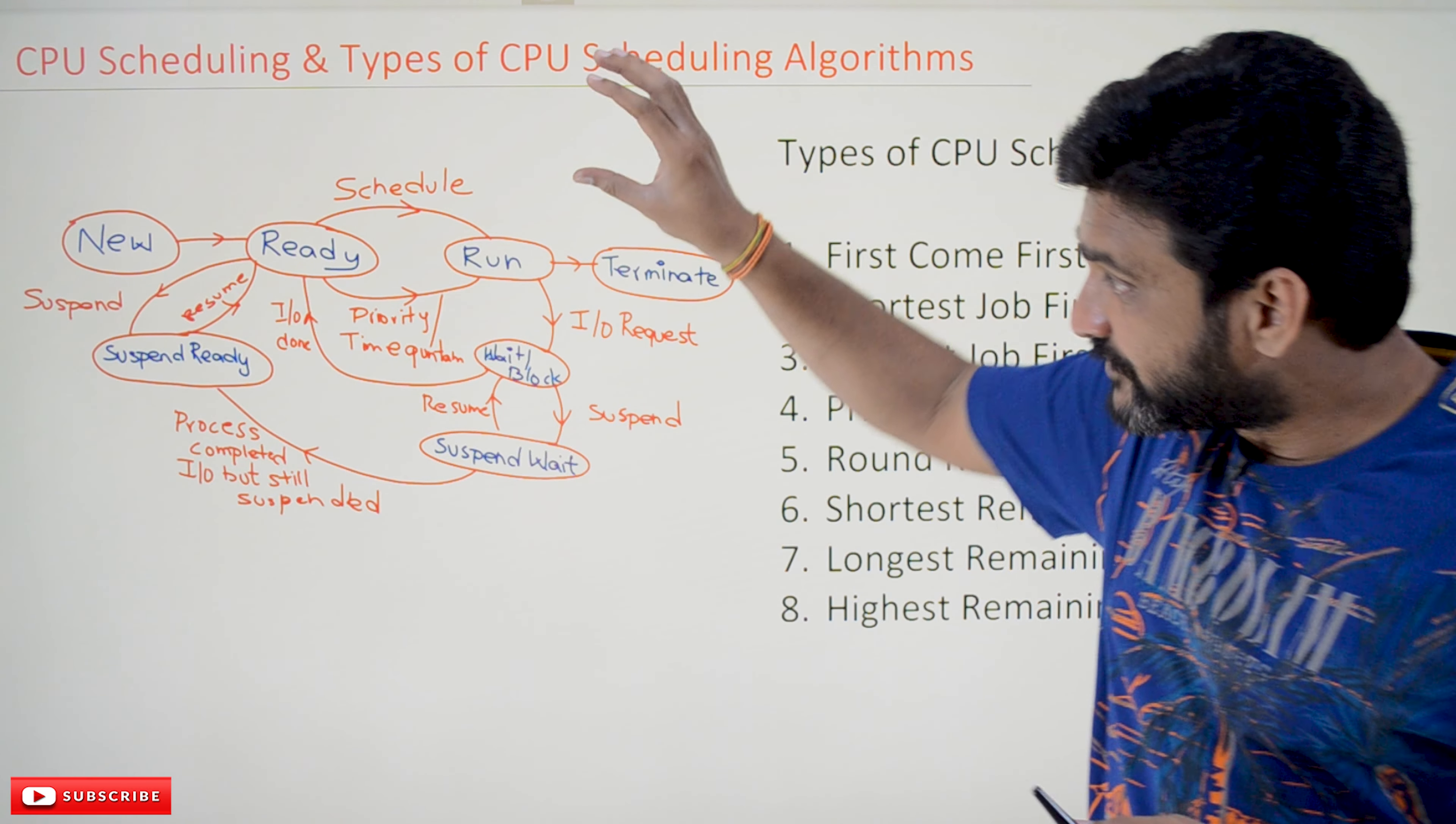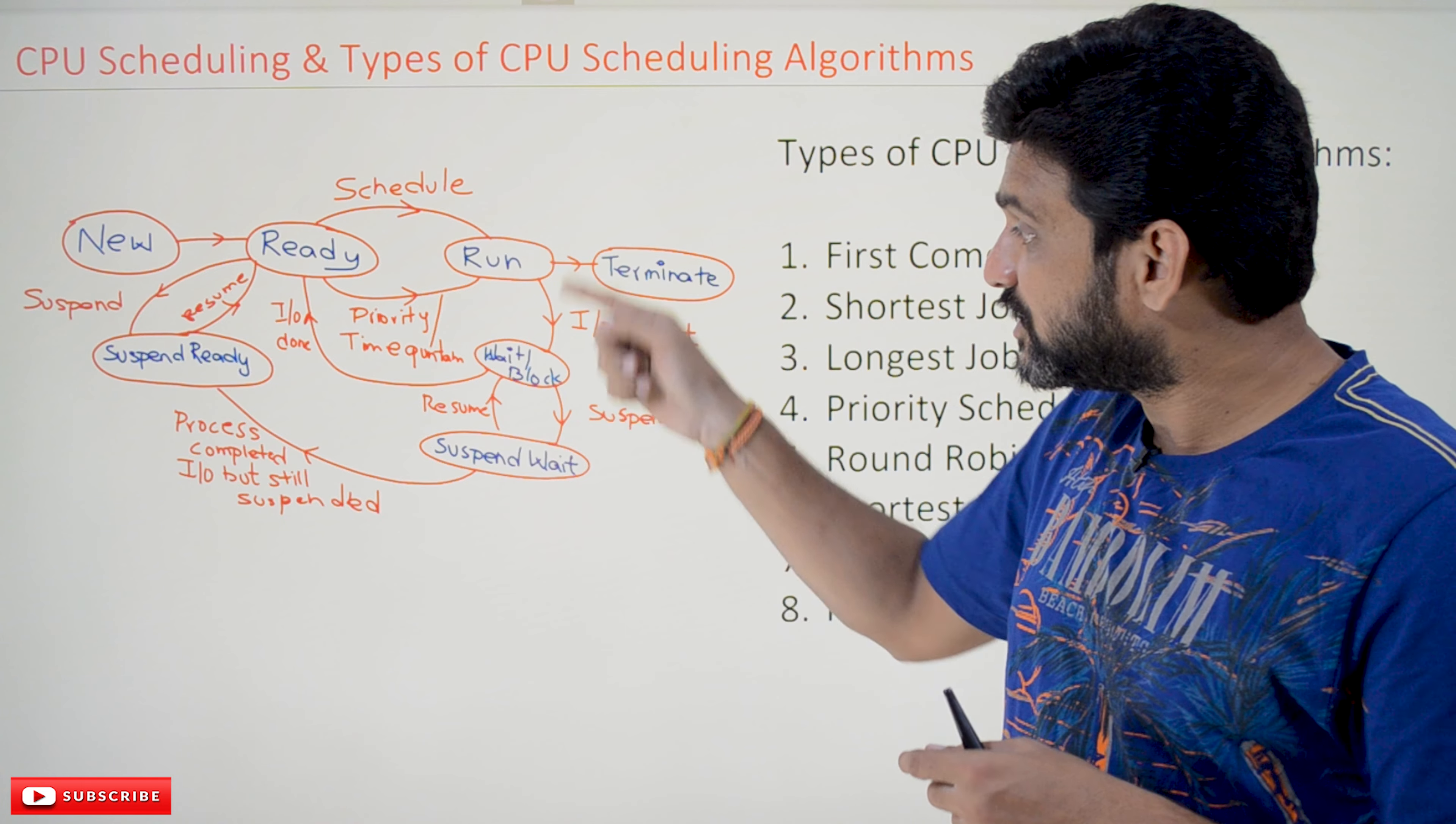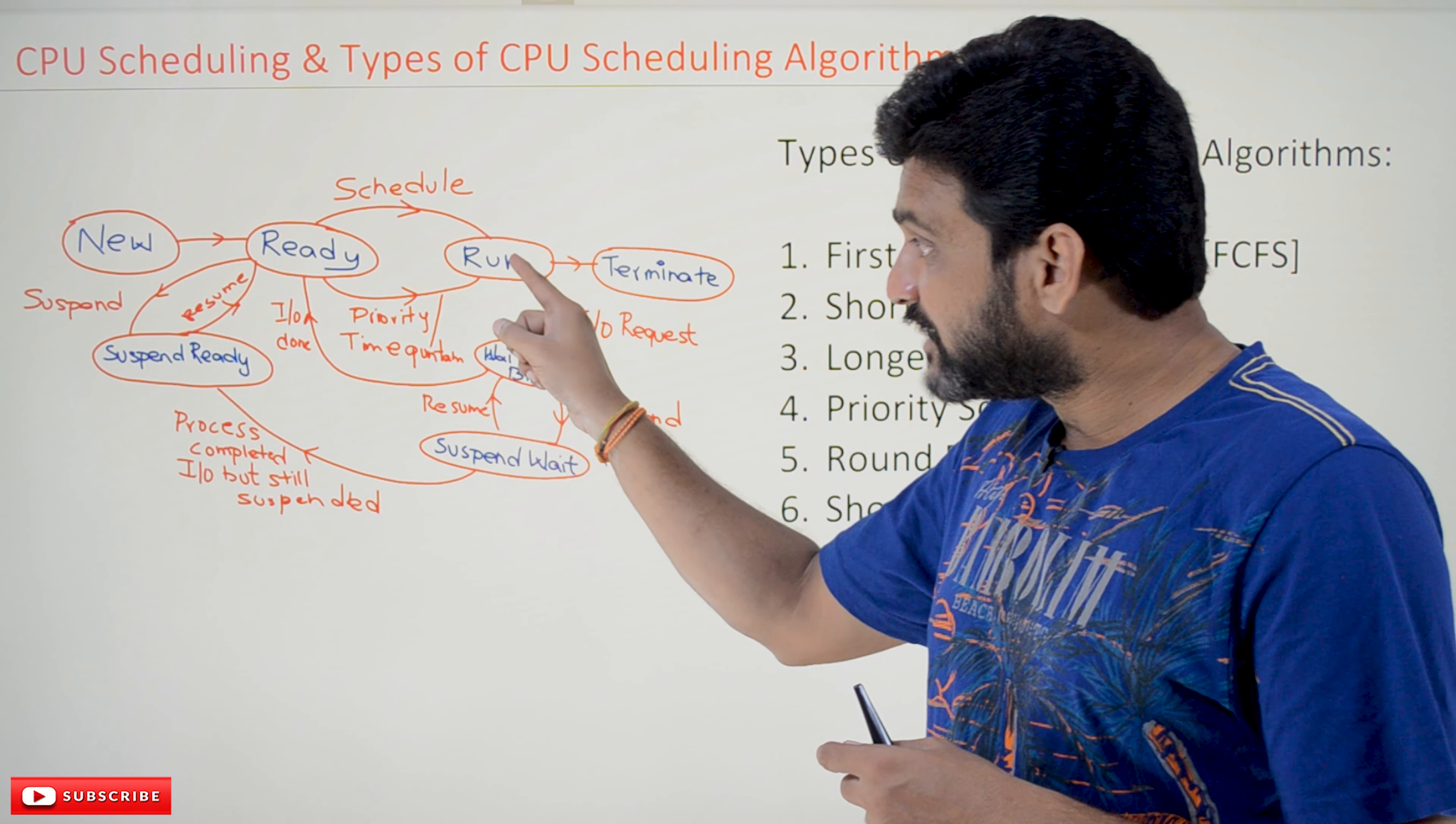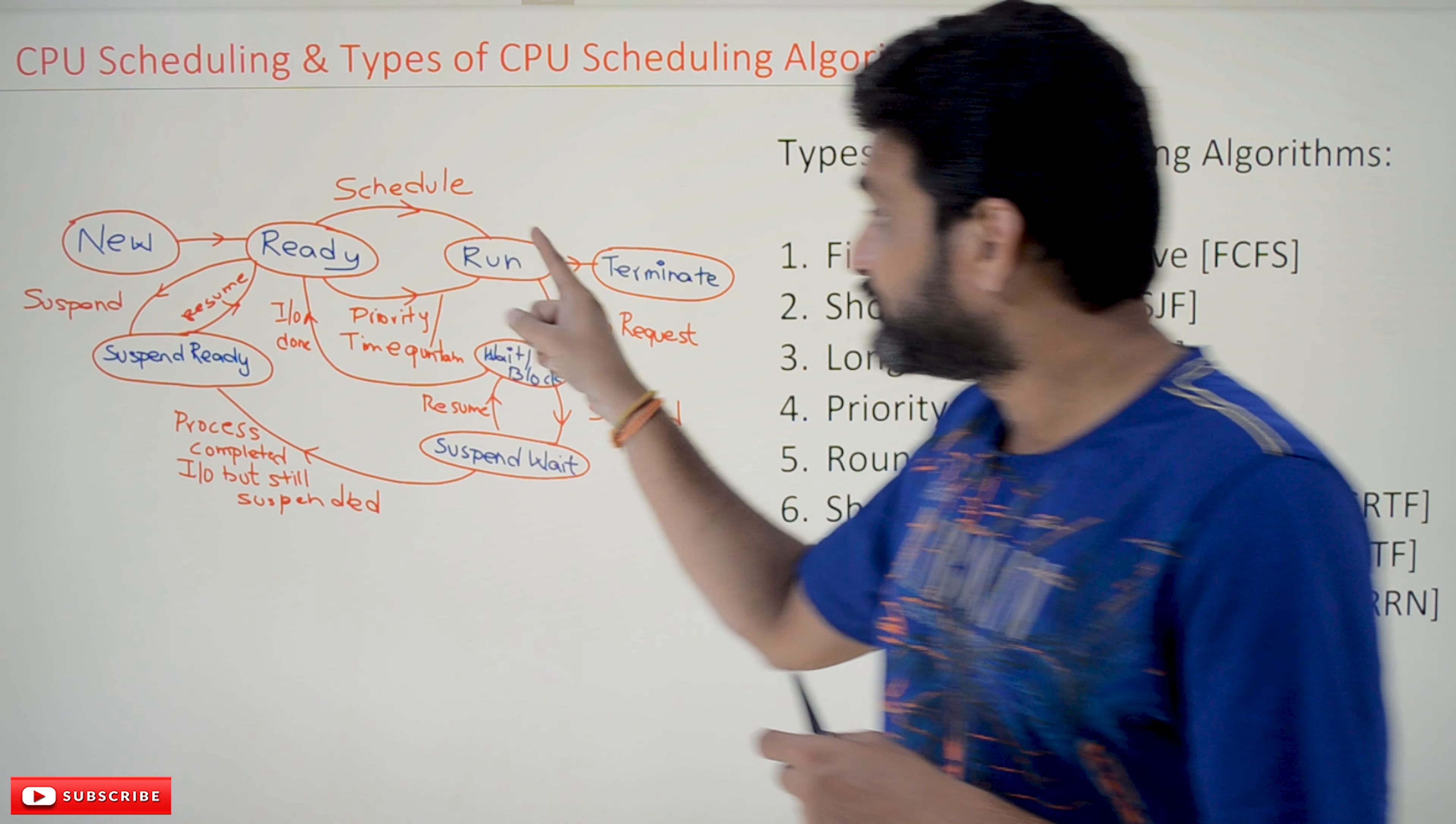Whenever a process is getting executed and is in running state, it will get shifted either to the wait or block state or to the ready state. For example, if a process is running, whenever the time quantum ends, the process in the running state will be shifted to ready state.